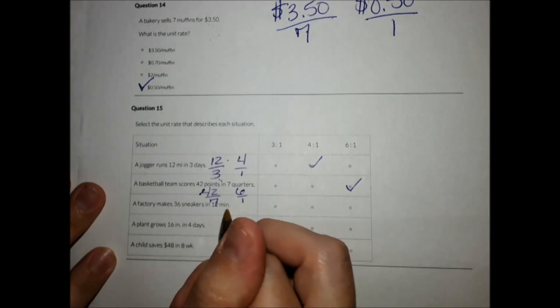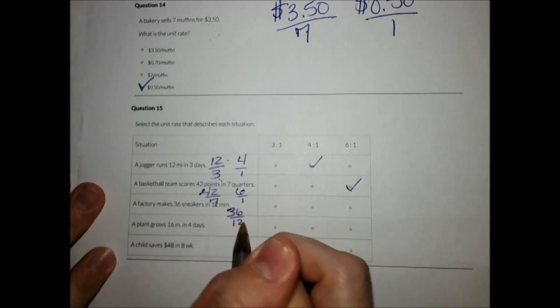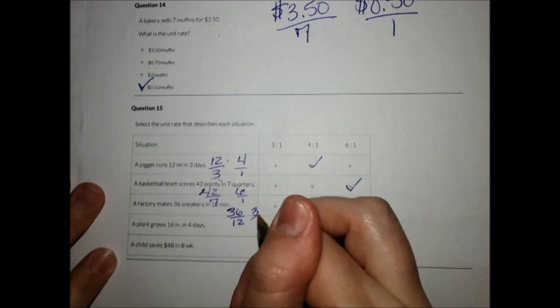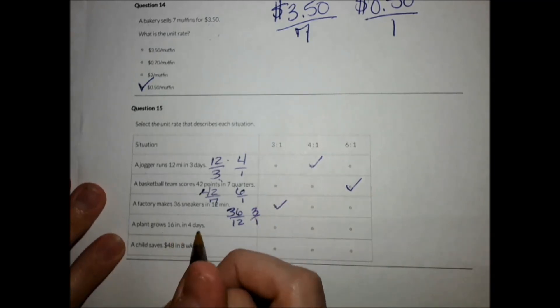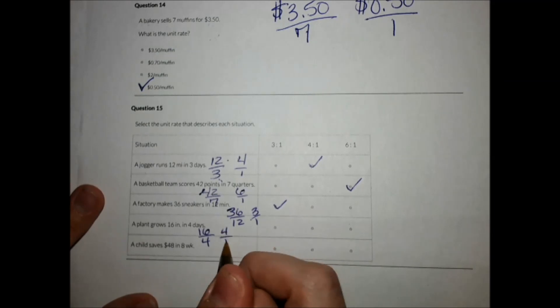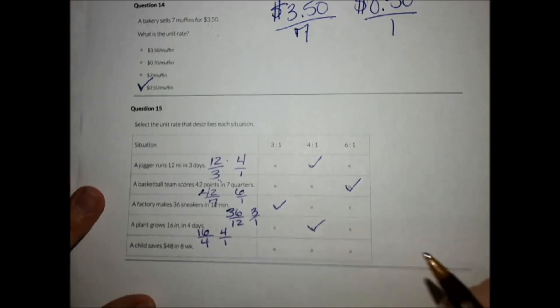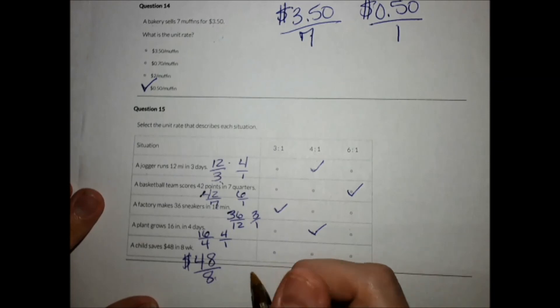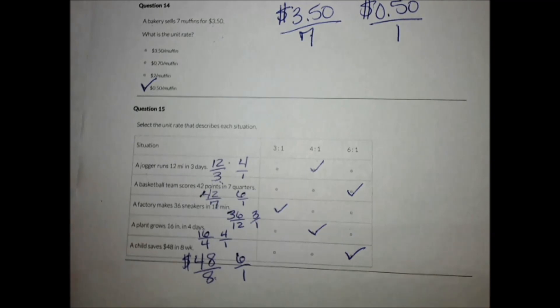This one, 36 sneakers in 12 minutes. Divide both the top and the bottom by 12, and I get 3 over 1. A plant grows 16 inches in four days. Divide both the top and the bottom by 4, and I do get 4 over 1. And then last, $48 in eight weeks, if I divide both the top and the bottom by 8, I do get 6 over 1. And hopefully that helps you with unit rates.